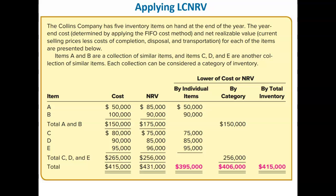The Collins Company has five inventory items on hand at the end of the year. The year-end cost determined by applying the FIFO cost method, and the net realizable value — current selling price less costs of completion, disposal, and transportation — for each item is presented.